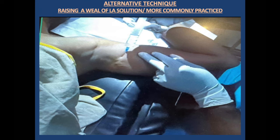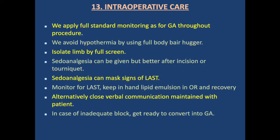Intraoperative care: apply full external monitoring as for general anesthesia throughout the procedure. Avoid hypothermia using a full body warmer (Hugger). Isolate the limb with full-screen draping. Sedoanalgesia can be given, but better administered after incision or tourniquet inflation to assess block efficacy. Sedoanalgesia can mask signs of local anesthetic systemic toxicity. Monitor for LAST and keep lipid solution available in the operating room and recovery area. Maintain close verbal communication with the patient throughout.